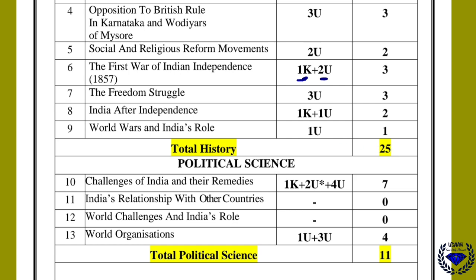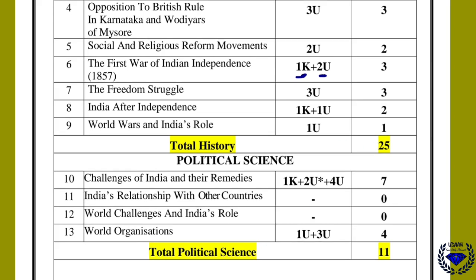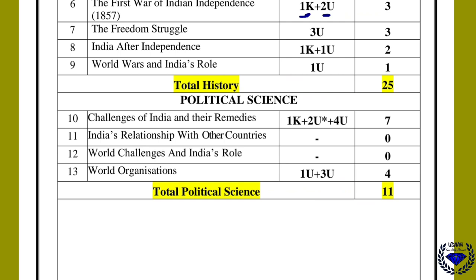From political science, there are four chapters. Challenges of India and the remedies has one objective question, a two-mark question, and a four-mark question — total seven marks. No marks have come from India's relationship with other countries, though you can expect one question. World challenges and India's role has no question. World organizations has one one-mark question and a three-mark question about the UN, so total around eleven marks from political science.